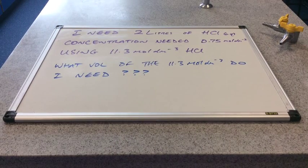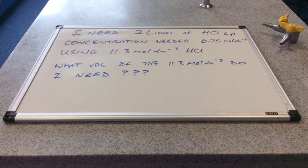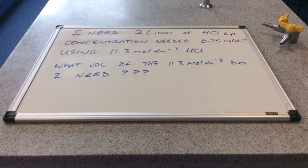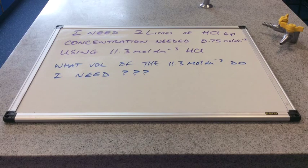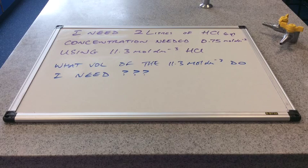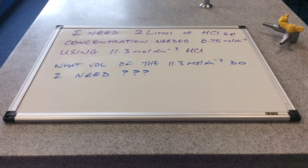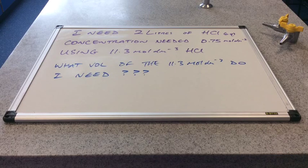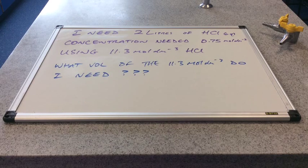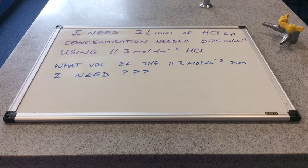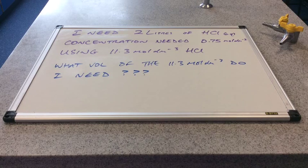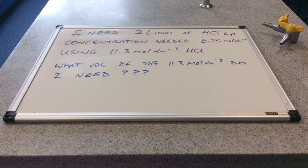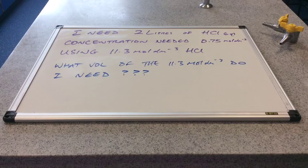So we'll finish off with another typical technician request type of question. So we need 2 litres of hydrochloric acid. And it needs to have a concentration of 0.75 moles per decimetre cubed. Our stock HCl is concentrated, quite concentrated at 11.3 moles per decimetre cubed. So essentially what volume of the stock HCl do we need to dissolve into that 2 litres to make the concentration 0.75 moles per decimetre cubed.